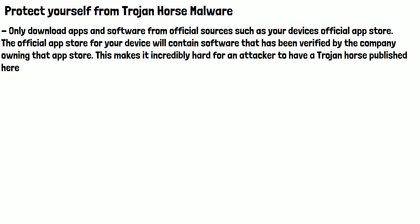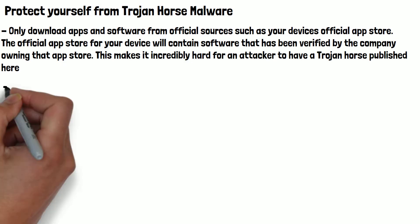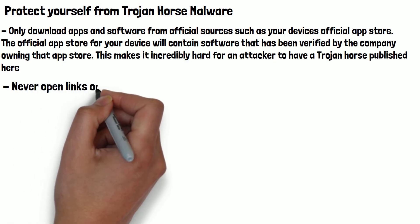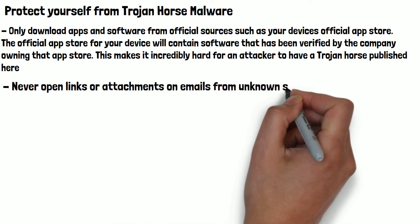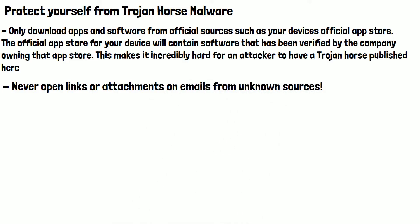The next easiest way to protect yourself is to never open links or attachments on emails from unknown sources. Always stop and think twice before opening anything if the email hasn't come from a source you know. Even if the email looks legit, it can still be dangerous. If you're not 100% sure, don't open it.